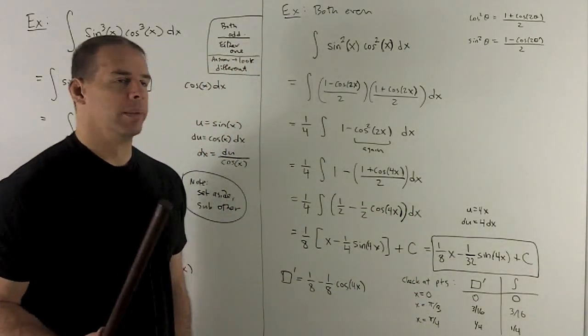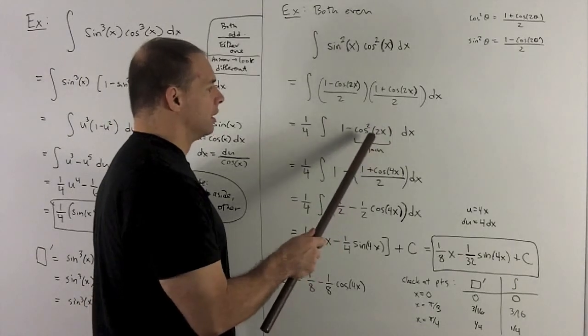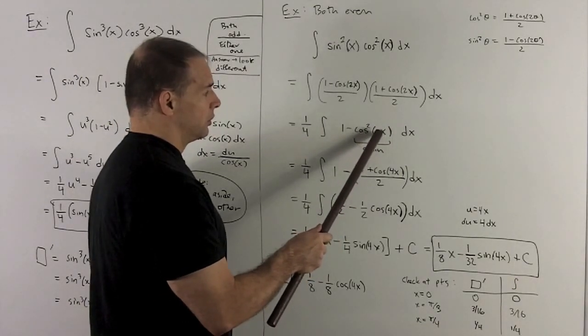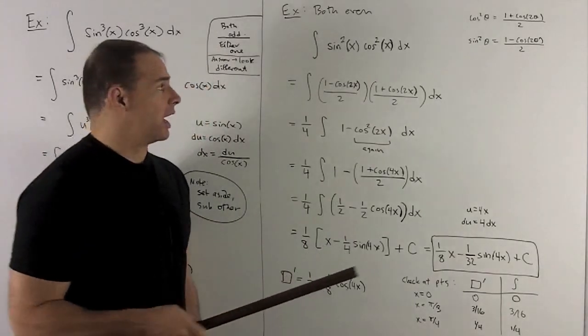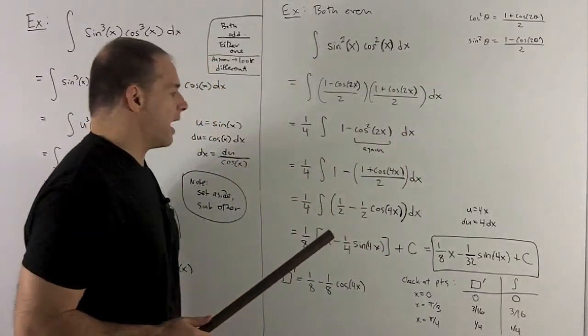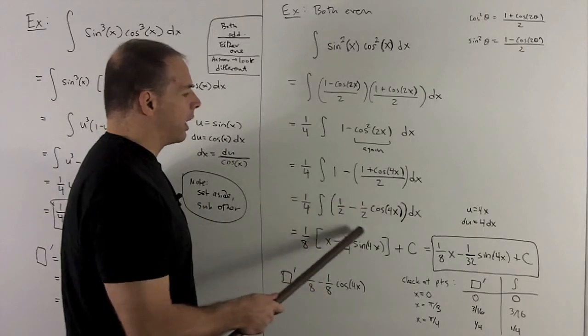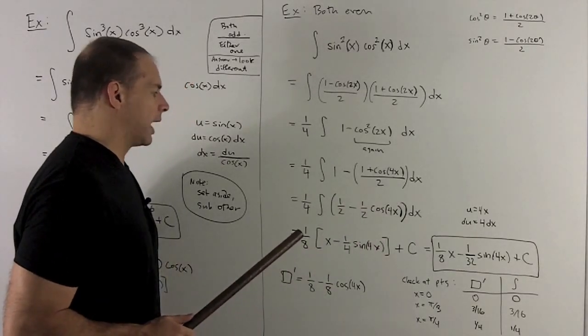Note also, if I wanted, I could have turned this into a sine squared 2x and then worked off of that. Then you would need to use the other formula that we have. But if you notice, I wound up with that anyway in this step.